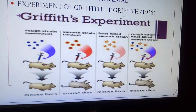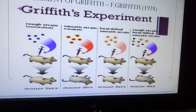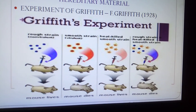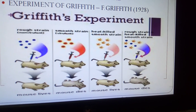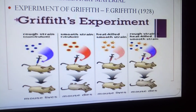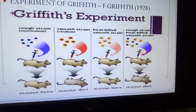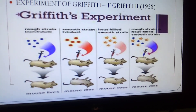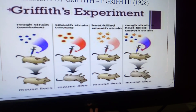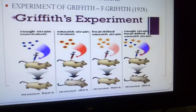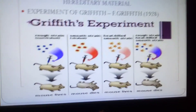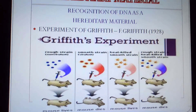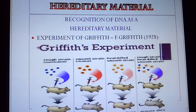First, we take a rough strain and inject it into the mouse — the mouse survives. If we inject the smooth strain into the mouse, the mouse dies. This is the key result of Griffith's experiment, and it helped explain the concept of hereditary material.